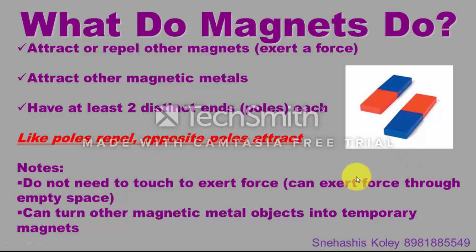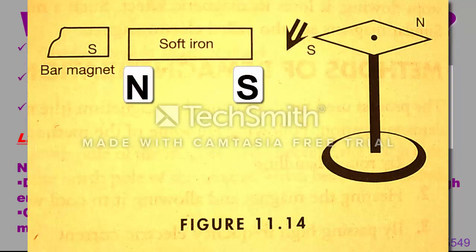Property of induction: a magnet can induce magnetism in substances like soft iron, cobalt or nickel. When a magnet is kept near another magnetic material, due to the influence of the bar magnet, the magnetic material is converted into a temporary magnet. This phenomenon is known as magnetic induction. Due to induction, the same pole arises at the far end and the opposite pole arises at the near end.